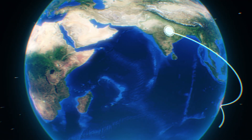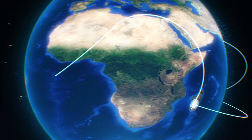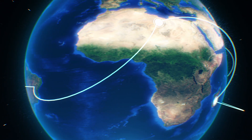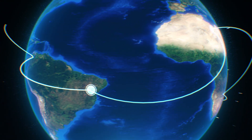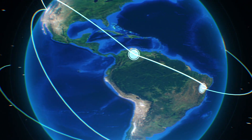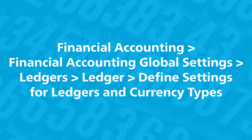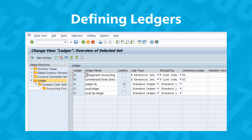Companies that will roll out to various markets would undoubtedly find that, at least in some countries, these ledgers will be required. We recommend setting them up from the beginning and activating them only for the countries where they're needed. Now let's delve into the configuration for ledgers. Follow this menu path, which shows a list of ledgers already in the system, as shown in this figure.